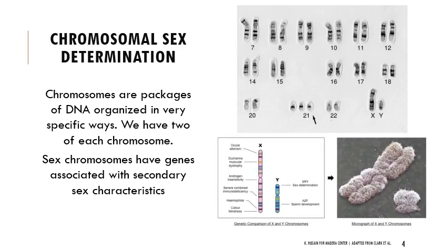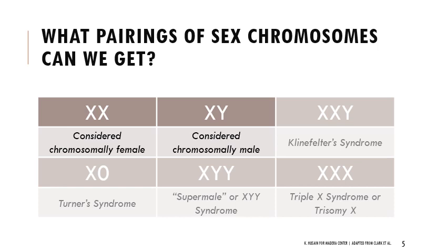Here are examples of the X and Y chromosome. They visually look like an X and a Y in this picture, but that's not always the case — it depends on what stage of the cell cycle they're at. You can see genes marked specifically, including SRY, which has to do with sex determination on the Y chromosome and sperm development. Usually if someone is XX, they're considered chromosomally female; if XY, chromosomally male.